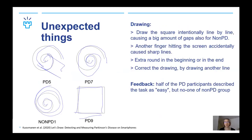There were some unexpected things during the study. Some participants drew the square intentionally line by line, explaining the large number of gaps also for the group without Parkinson's in the square drawing. Another finger accidentally hitting the screen caused sharp straight lines and a big error rate, as seen in the PD5 spiral. Some drew extra rounds at the beginning or end of the spiral, like PD7 and non-PD1, which challenged the error calculation that uses the angle to find the closest dot on the template. Some participants also made corrections by drawing another line closer to the template.